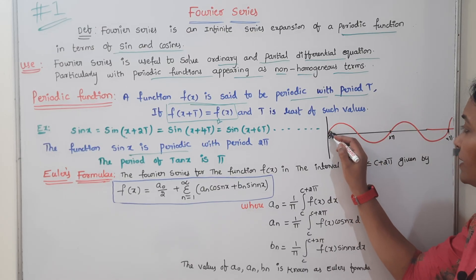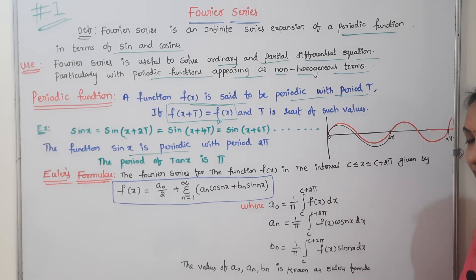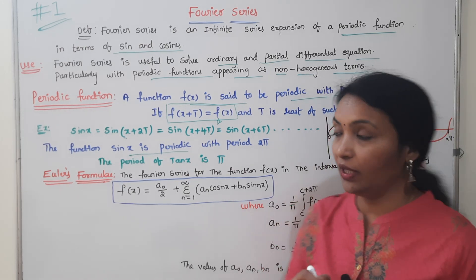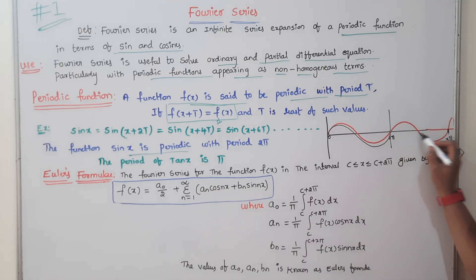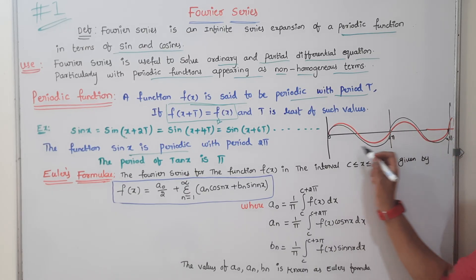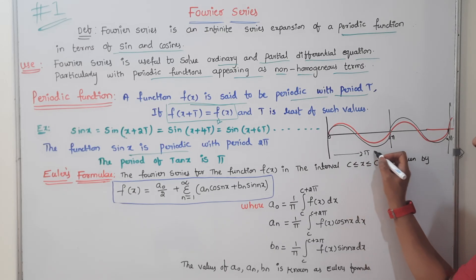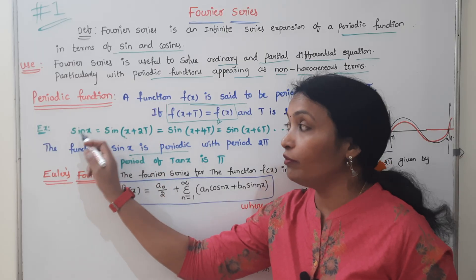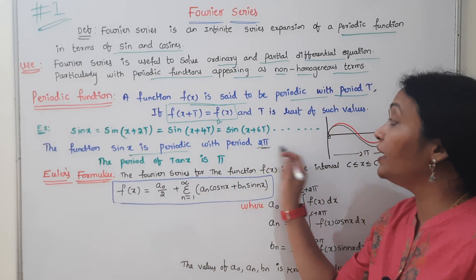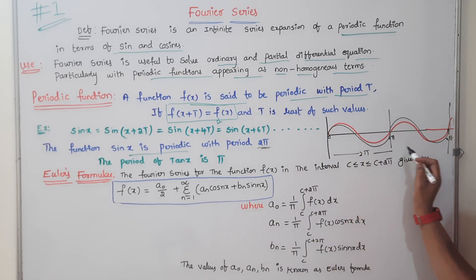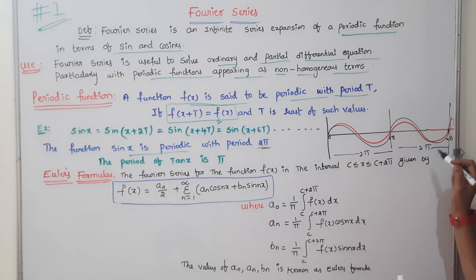That means one wave starts here and ends here. This first wave spans 2π. The second wave starts here and ends here — this second wave is also 2π.